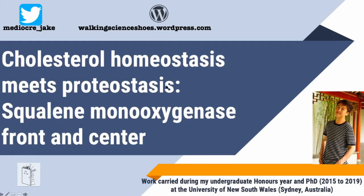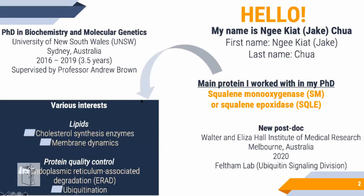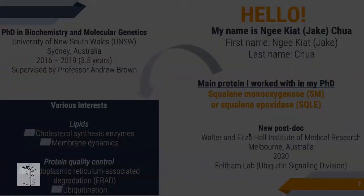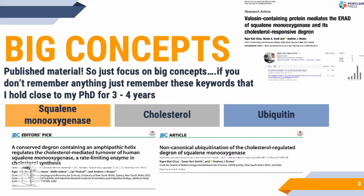I'll jump straight into it. I'll be talking about cholesterol homeostasis and protein homeostasis using this enzyme as an example to illustrate their connections. My name is Jake. I recently finished my PhD in Sydney, Australia — about three and a half years — working on this enzyme, squalene monooxygenase, which brought me into the world of lipids and protein quality control. I started my postdoc four weeks ago, and most of my PhD work has been published, so I'll focus on the big picture.